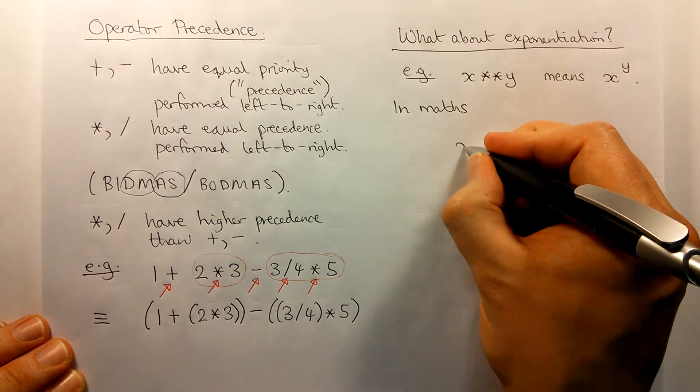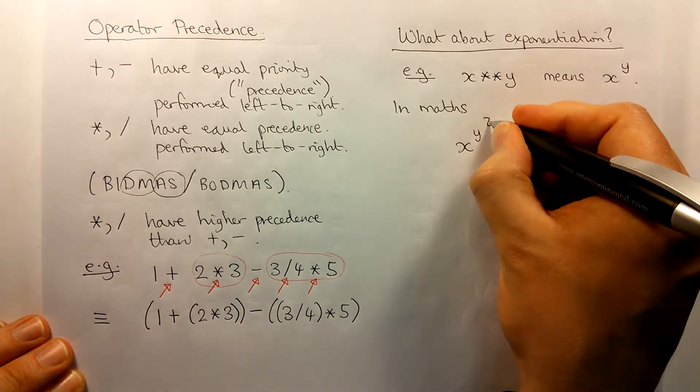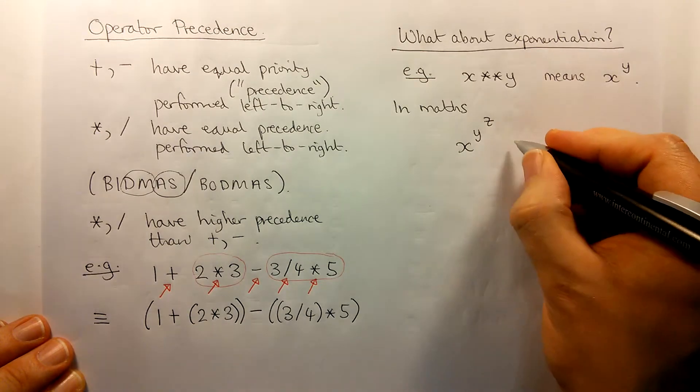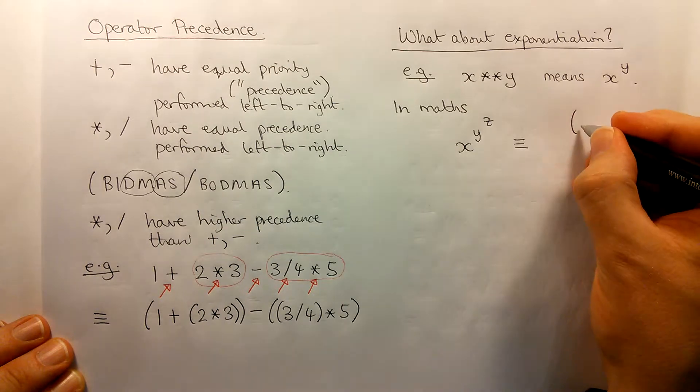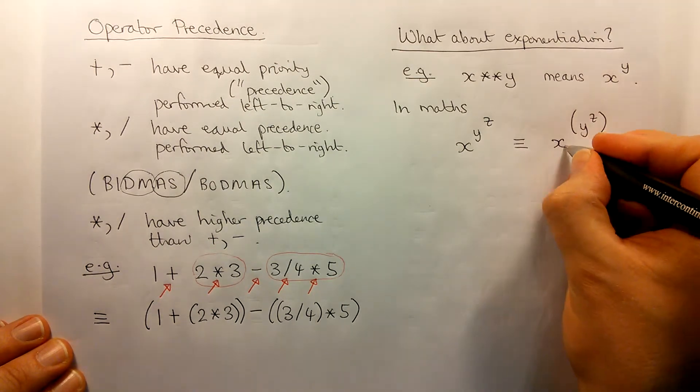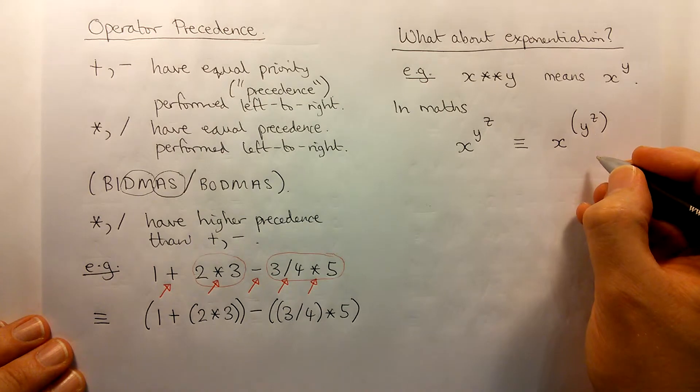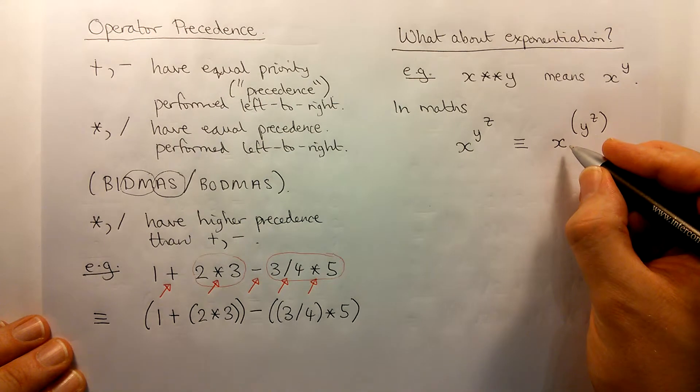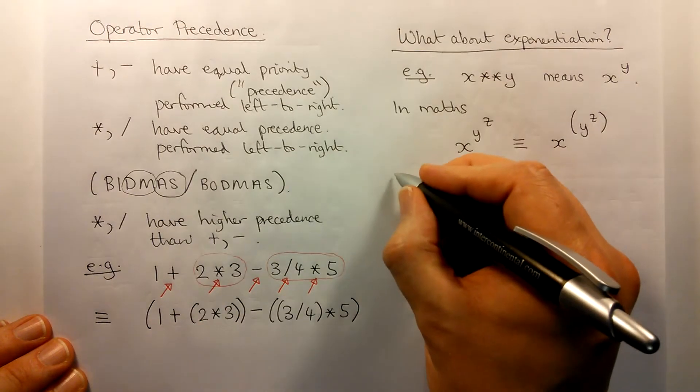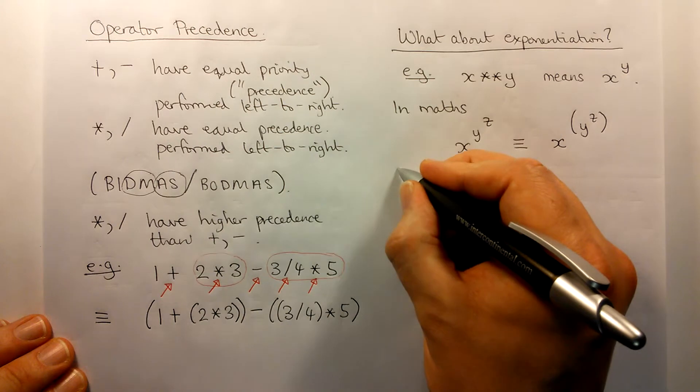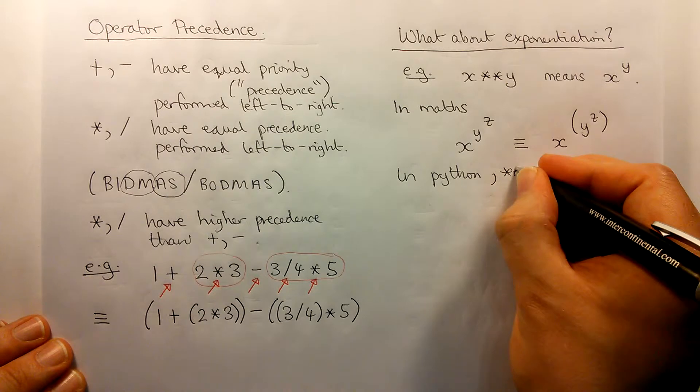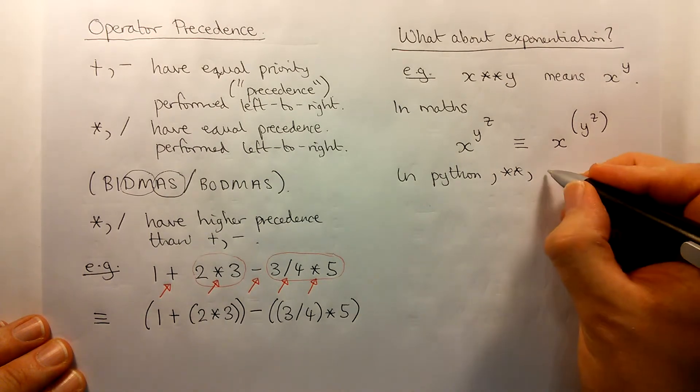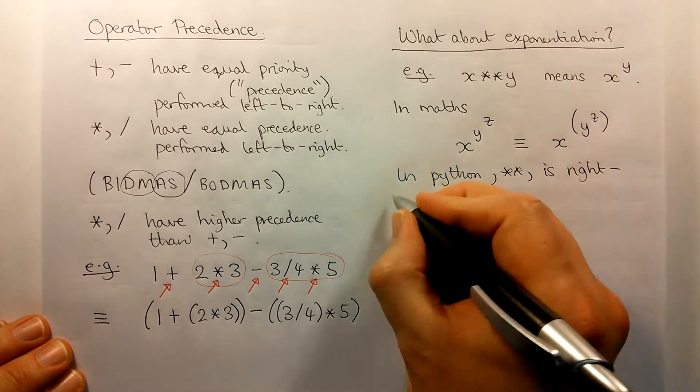Well, in ordinary mathematics, if I have a chain of exponentiation like this, x to the power y to the power z, that's conventionally taken to mean that we perform the rightmost operation first. So this is actually not like addition and subtraction and multiplication division. So in mathematics, exponentiation is conventionally right associative. And the same is true in Python. So star star operator, the exponential operator, is right associative.